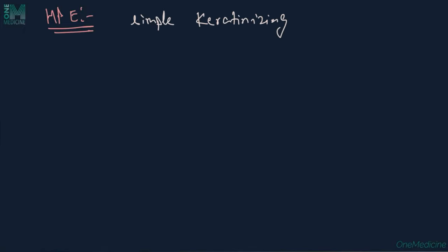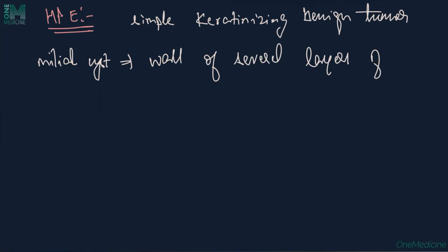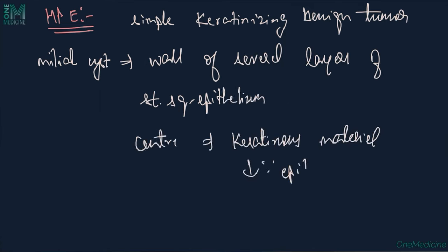Histopathology of milia represents a simple keratinizing type of benign tumor. Milial cysts consist of a wall of several layers of stratified squamous epithelium and central keratinous material similar to epidermal cysts.